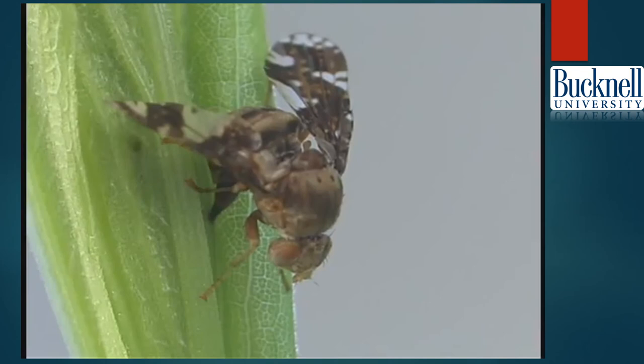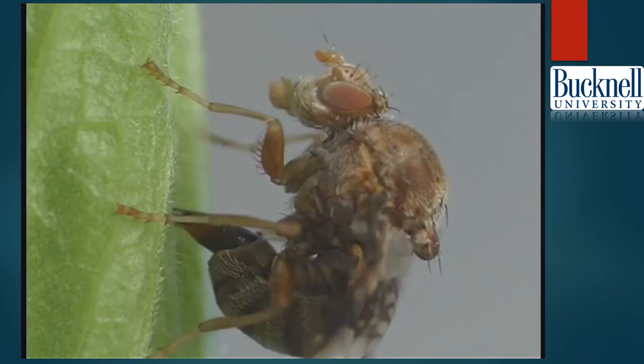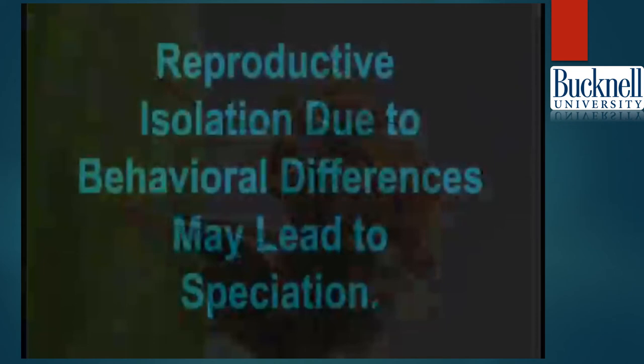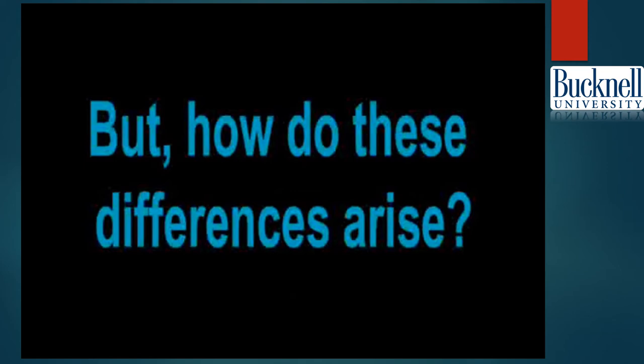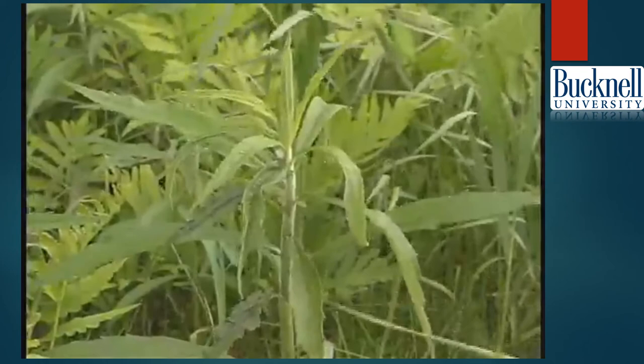Thus there seems to be considerable reproductive isolation due to behavior — that is, the choice of mates and host plants. Such reproductive isolation due to behavioral differences may lead to speciation. But how did these differences arise? First we will try to determine whether gall flies moved from tall goldenrod to late goldenrod, or if the shift went in the other direction.